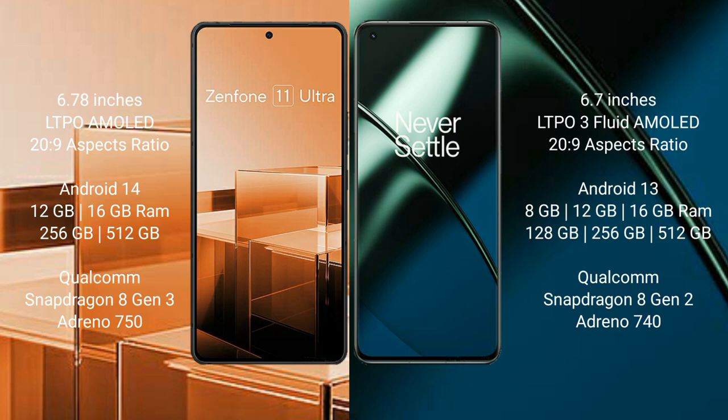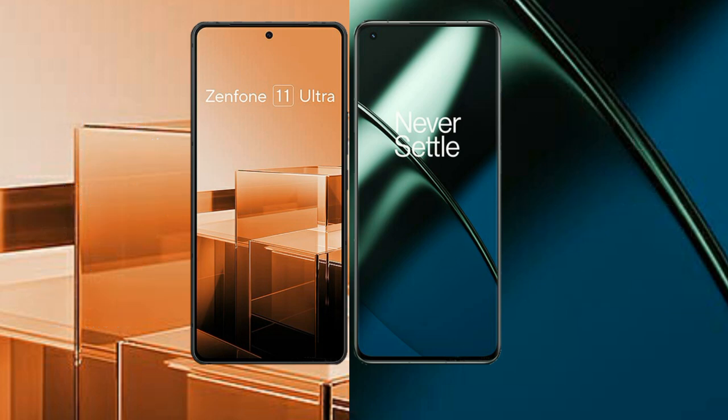The Asus Zenfone 11 Ultra comes with 12GB or 16GB RAM, 256GB or 512GB internal storage, a Qualcomm Snapdragon 8 Gen 3 processor, and an Adreno 750 GPU. The OnePlus 11 comes with 8GB, 12GB, or 16GB RAM, 128GB, 256GB, or 512GB internal storage, a Qualcomm Snapdragon 8 Gen 2 processor, and an Adreno 740 GPU.